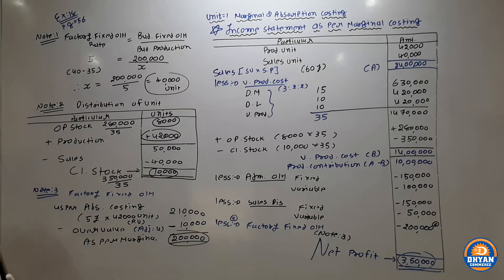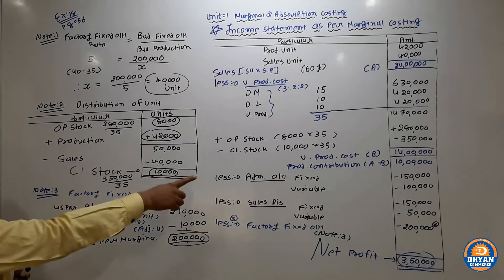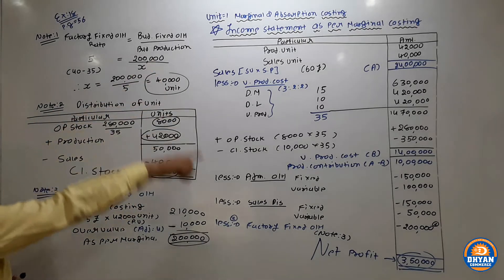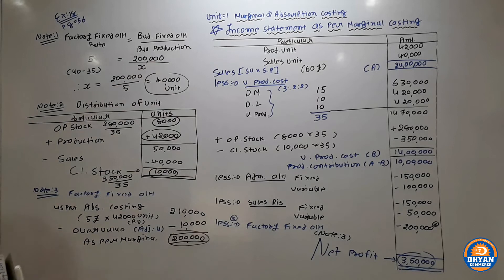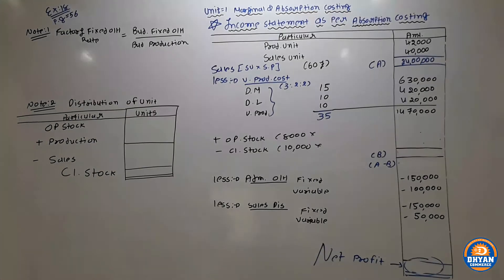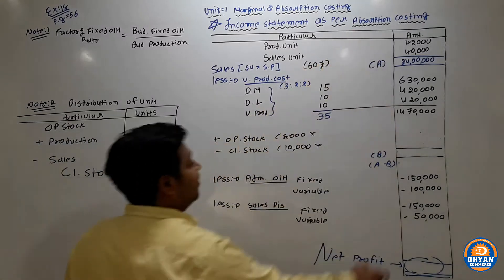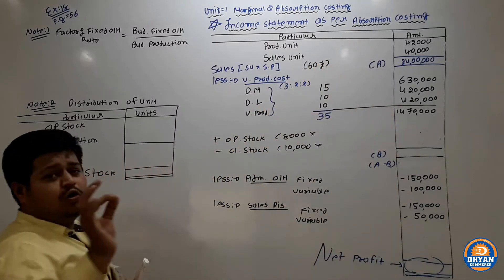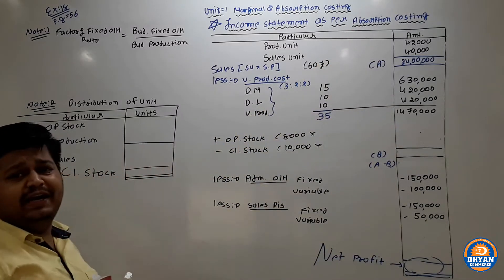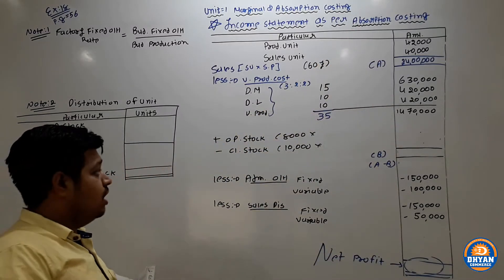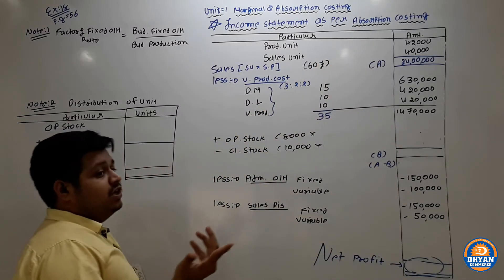The marginal costing statement is now complete. Now we copy the same data and prepare the absorption costing table. We will make a small change — in absorption costing, production cost includes both variable and fixed production overheads.